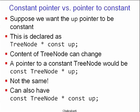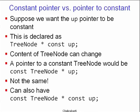Two more comments about pointers. First: constant pointer versus pointer to a constant. Suppose you want the 'up' pointer to be constant because the tree is never changed once formed. You declare it as 'TreeNode* const up' — the const token closest to the variable name means the pointer cannot be changed, but the data pointed to can be changed. Whereas 'const TreeNode* up' means a pointer to a const tree node — the components of the tree node cannot be changed. You could also use two consts, so neither the pointer itself nor the contents can be changed.